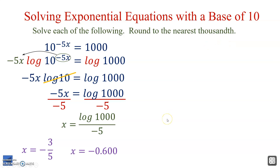Note that when we logged both sides and got log 1000, log 1000 actually equals 3 because 10 to the 3rd power gives you 1000. So you could have substituted 3 directly, leading straight to negative 3 fifths.